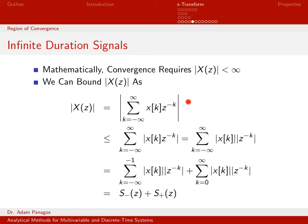I've also used the fact that the magnitude of a product is a product of magnitudes. Then I split this infinite sum into two pieces: the first part containing all terms from minus infinity up to negative 1, and the second part containing all terms from 0 to infinity.